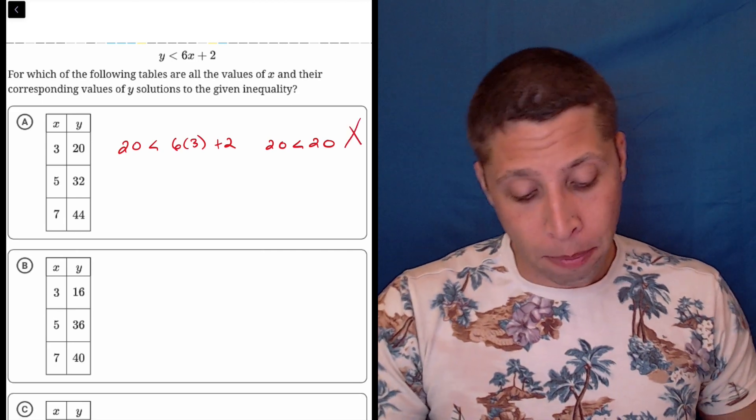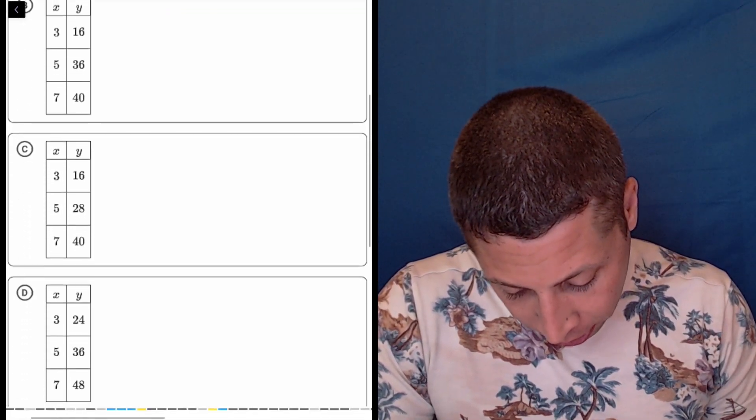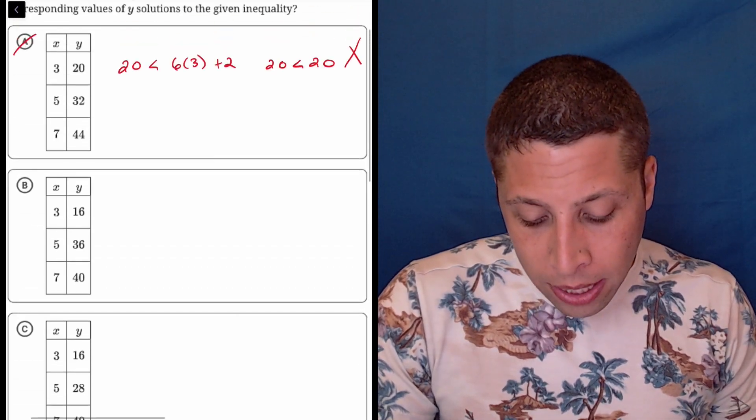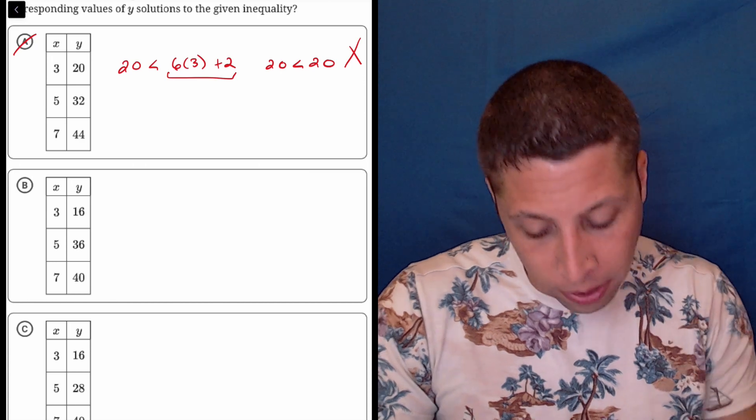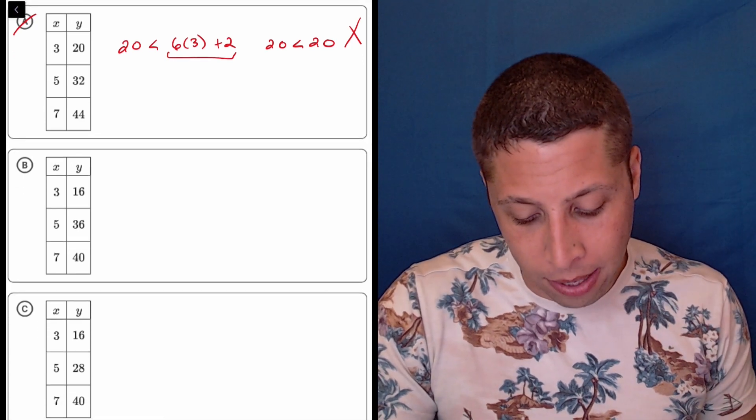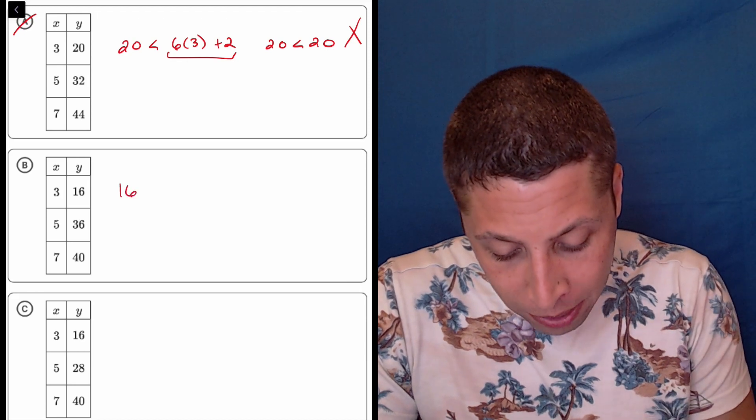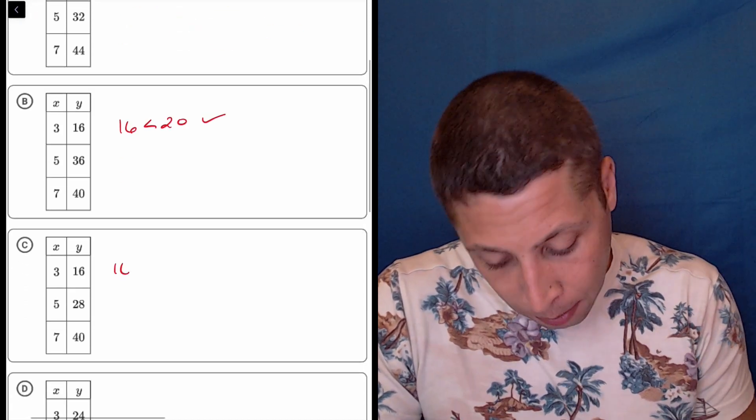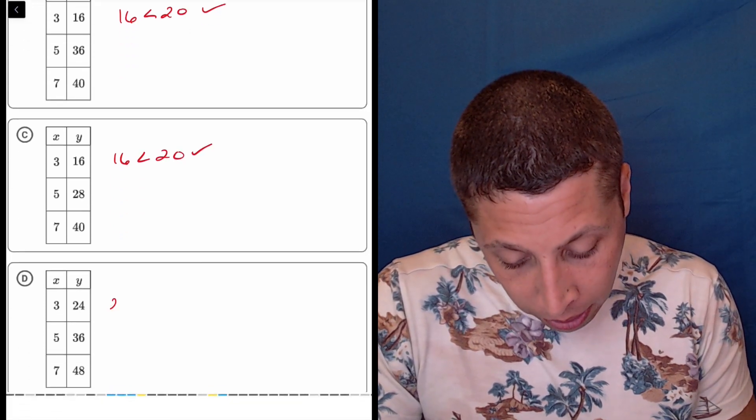If I scroll down, they repeat the 3, so I don't even need to calculate this side of the equation again. The only part that's going to change is the left side, the y side. So B would be 16 is less than 20, that's true. Same thing here, 16 less than 20, that's true. And then here we would have 24 is less than 20, so that's also false.